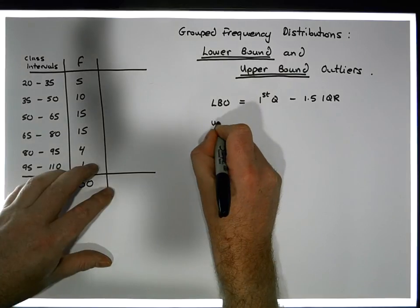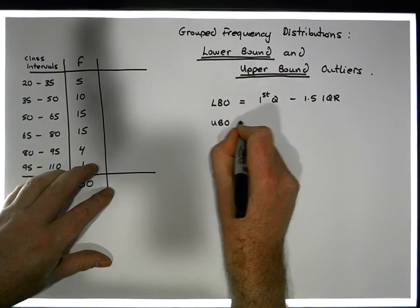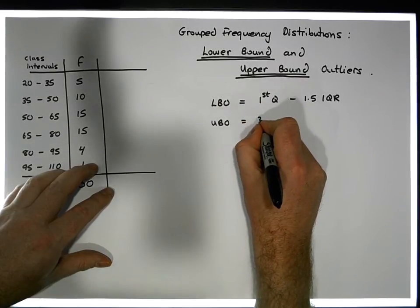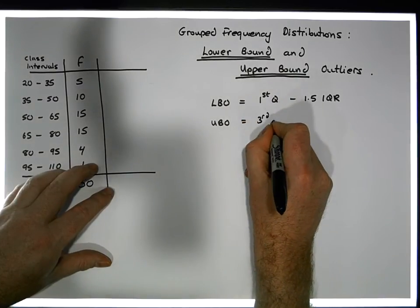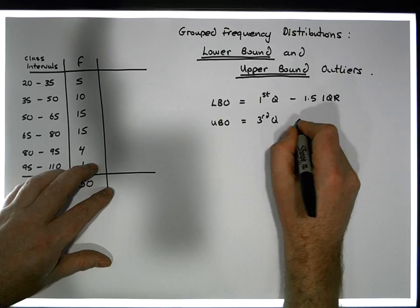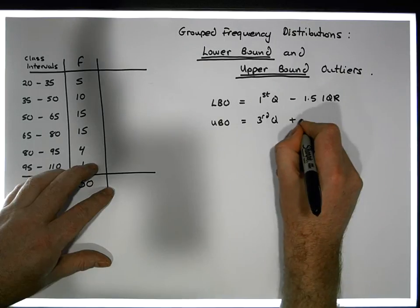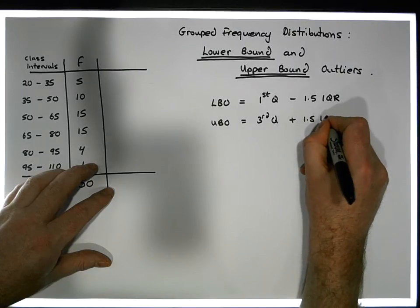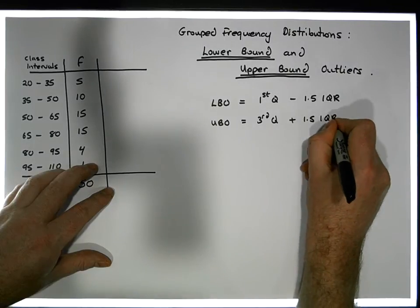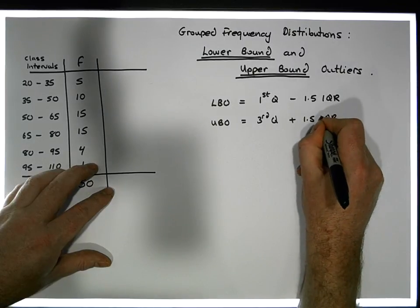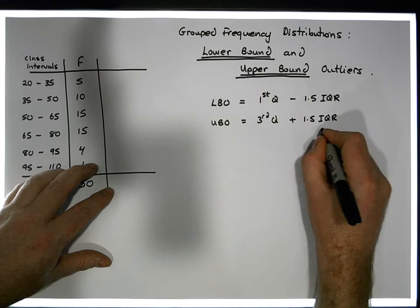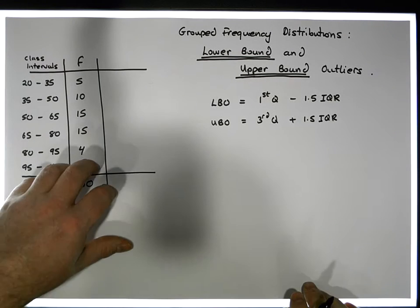With respect to upper bound outliers, what we do is we look at the third quartile and we add on 1.5 times the interquartile range — the IQR, the interquartile range.